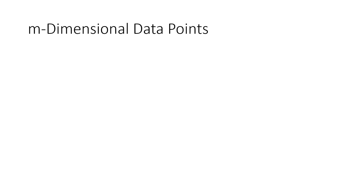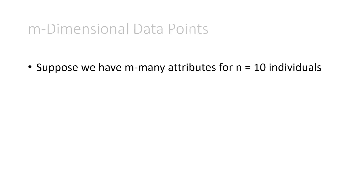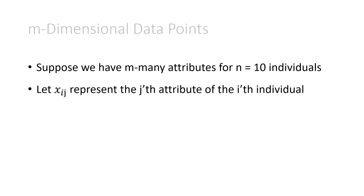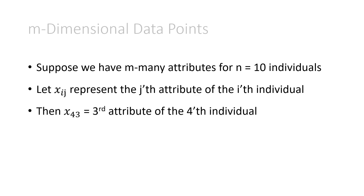That was two dimensions, which is better, but really we want m-dimensional data points. We want to know an arbitrary amount of attributes — an arbitrary amount of information about n individuals. Suppose we have m many attributes for n equals 10 individuals. As long as m is a positive integer like 1, 2, 3, and so on, the math will still work out. Let xij represent the j-th attribute of the i-th individual. Then x43 is the third attribute of the fourth individual. The first subscript looks up the individual — so it's the fourth individual — and the second subscript is 3, meaning the third attribute.